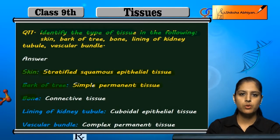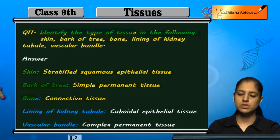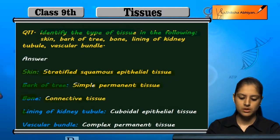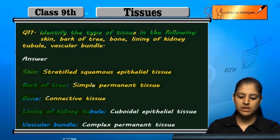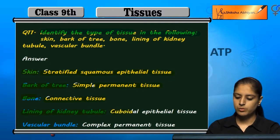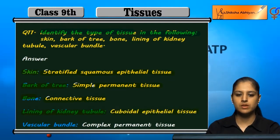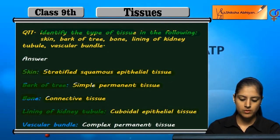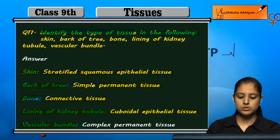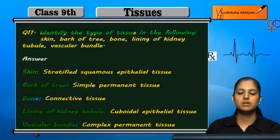Bones are connective tissue. The lining of kidney tubules is cuboidal epithelial tissue. Vascular bundles are complex permanent tissues.